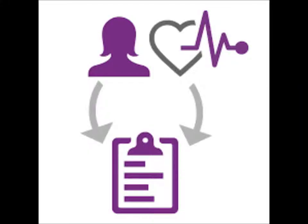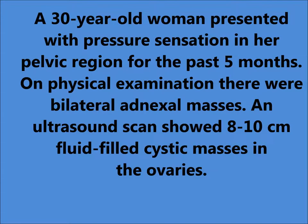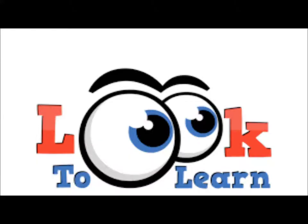Clinical scenario: a female patient, 30 years of age, presented with pressure sensation in her pelvic region for the past five months. On physical examination, there were bilateral adnexal masses, and ultrasound scan showed 8 to 10 centimeter fluid-filled cystic masses in the ovaries. Laparotomy — an abdominal operation to remove cysts — was done and the tumors were removed.